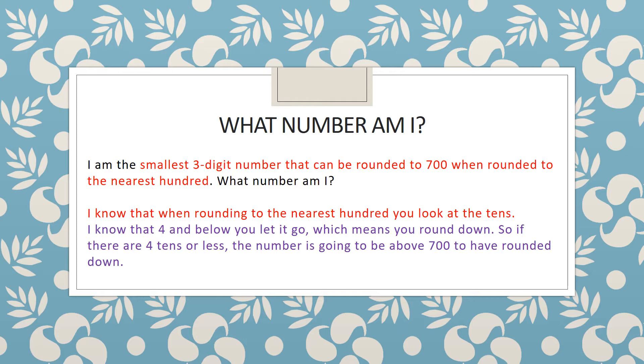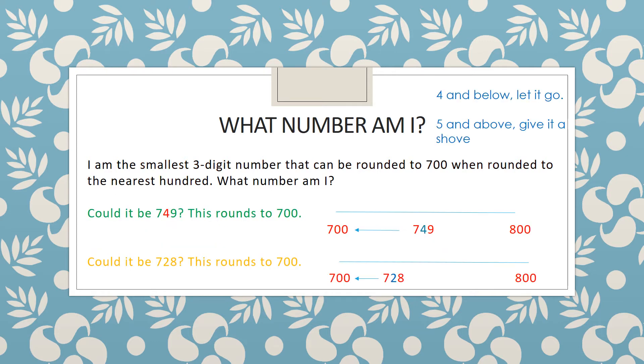Let's see what this looks like. So 749 and 728 are above 700 but because there are four tens or less than four tens it means that they've been rounded down to 700.